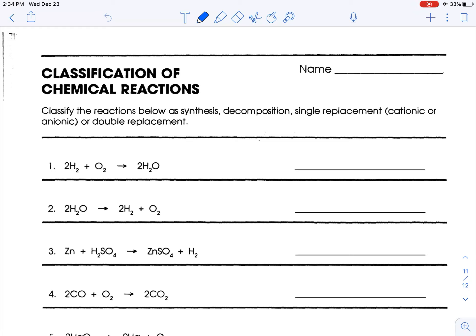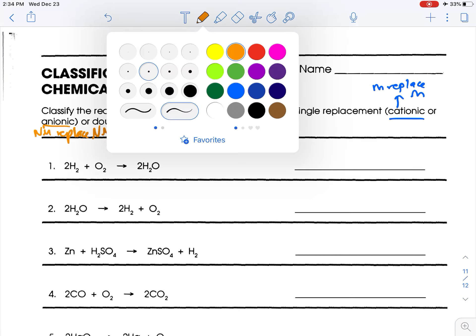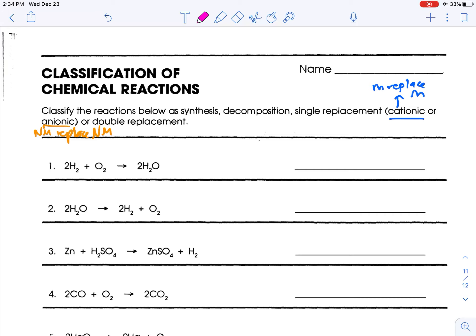Now going back here, cationic single replacement is when metals replace other metals, and anionic single replacement is when non-metals replace non-metals. Okay, let's choose pink.